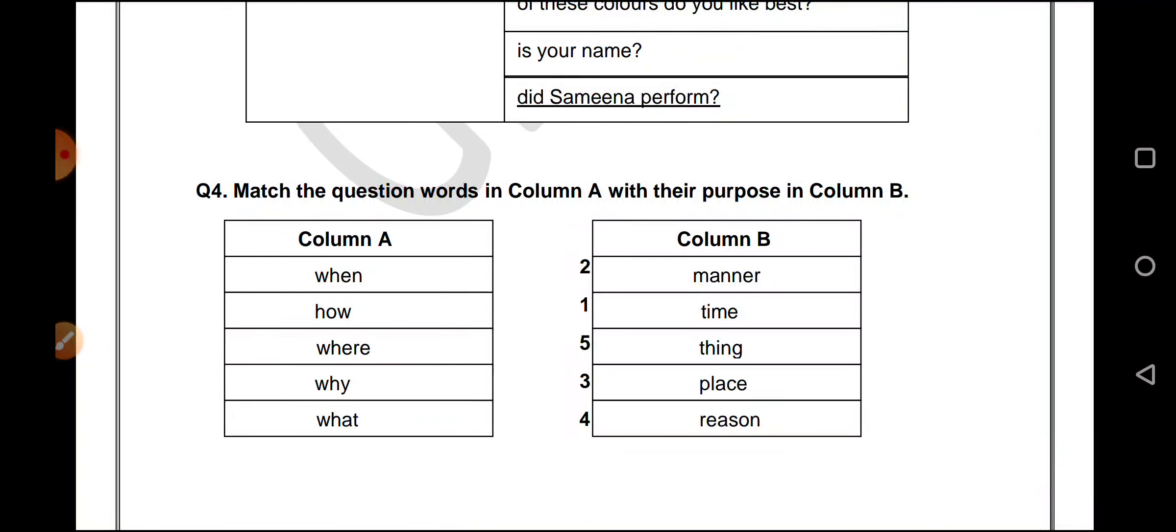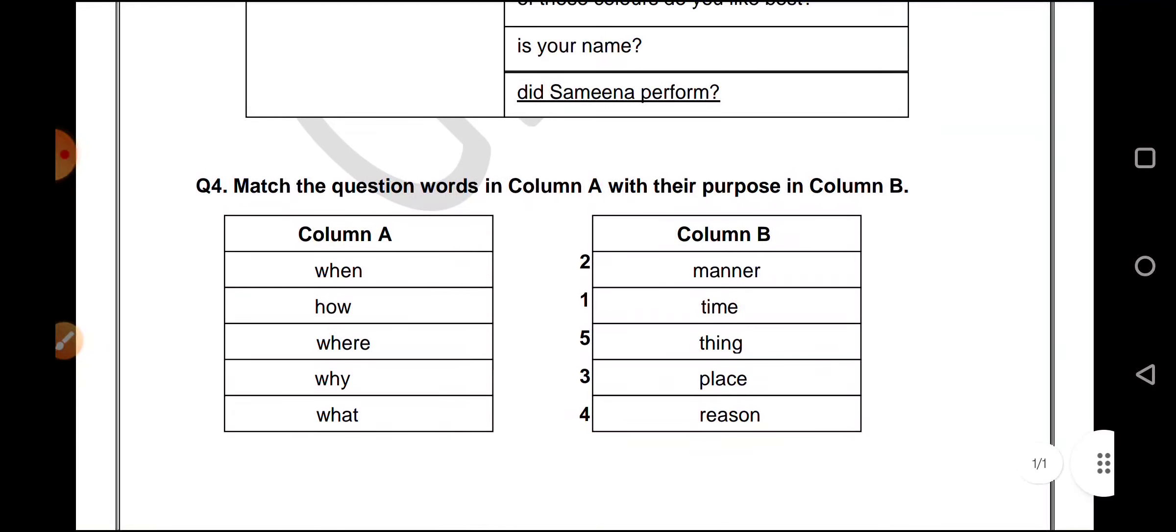Match the question words in column A with their purpose in column B. If you remember, we have already discussed this, haven't we? When is used for time. How is used for manner. Where is used for place. Why is used for reason. And what is used for thing.